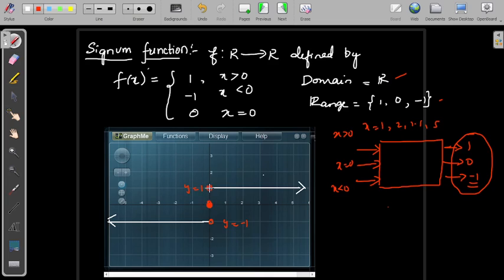So for 0, it is not equal to 1. For 0, it is not equal to minus 1. For 0, it is 0, to be more clear and specific about the graph of the function.